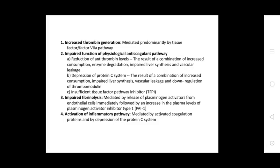Increased thrombin generation is mediated prominently by tissue factor and the factor VII pathway. Impaired function of physiological anticoagulant pathways includes reduction of antithrombin levels resulting from a combination of increased consumption, degradation, impaired liver synthesis, and vascular leakage. Depression of the protein C system results from increased consumption, impaired liver synthesis, and vascular leakage, or downregulation of thrombomodulin. Insufficient tissue factor pathway inhibitor. Activation of inflammatory pathways is mediated by inhibitory coagulation proteins and depression of the protein C system.